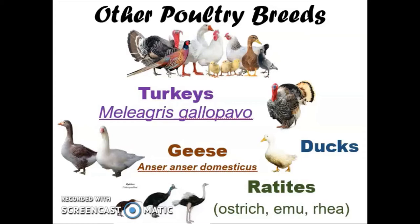Ducks are going to vary — there are two different species of ducks. Most of them are one particular species but then there will be a breed that is another. And your ratites are actually a family of birds so they all have different species names.